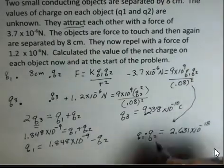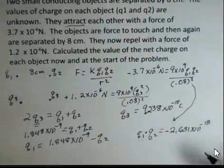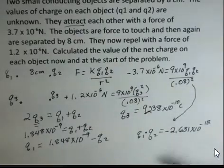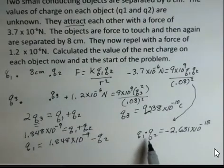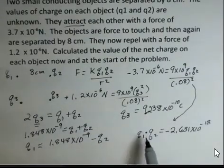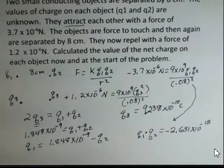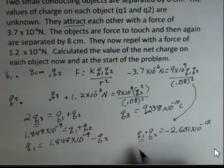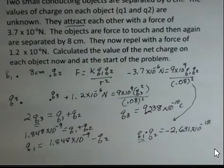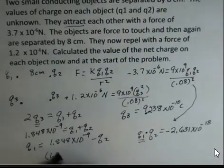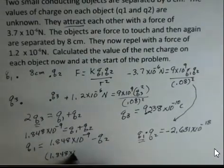We take our force, it's a negative, times 0.08 squared, divide by 9 times 10 to the ninth. And what we come up with for Q1 times Q2 is 2.631 times 10 to the minus 18. I'm checking to see if you're actually following the steps here. So I'm using this, I'm solving for Q1 times Q2. What you should observe is this is a minus.